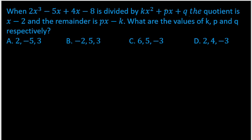In this question, it's division of polynomials. It says whenever we divide this polynomial with another polynomial, here it has constants k, p, and q. The quotient is x minus 2 and the remainder is px minus k. What are the values of k, p, and q?